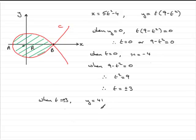So we had to give the x coordinates of A and B. So you can see that at A, x must be equal to minus 4.